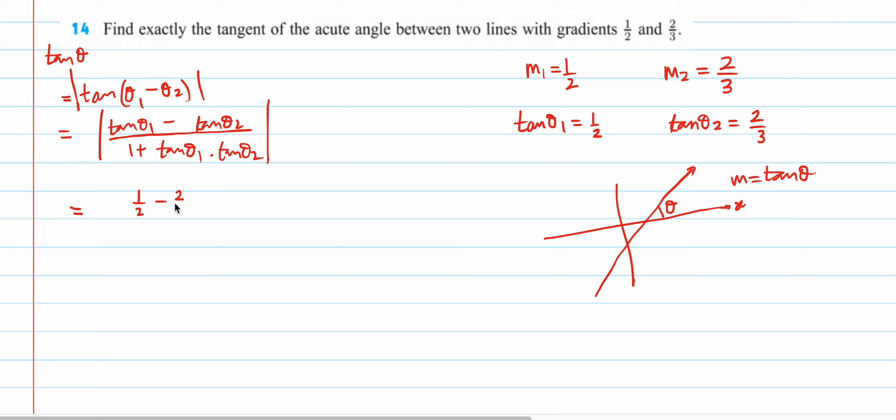So, half minus two-thirds upon one plus half into two-thirds. So, if you take the LCM, it's a modulus of this. Means, if it's negative, we make it positive. So, how much is that?